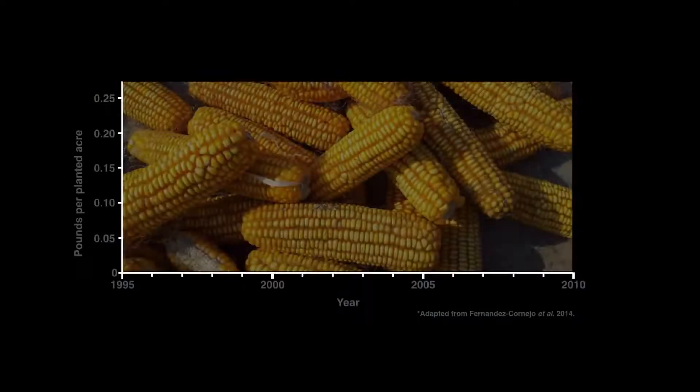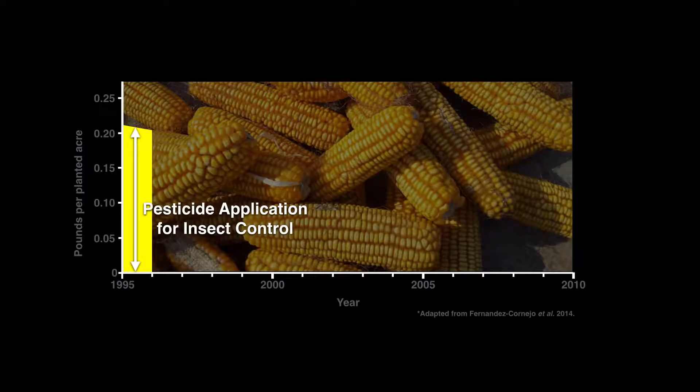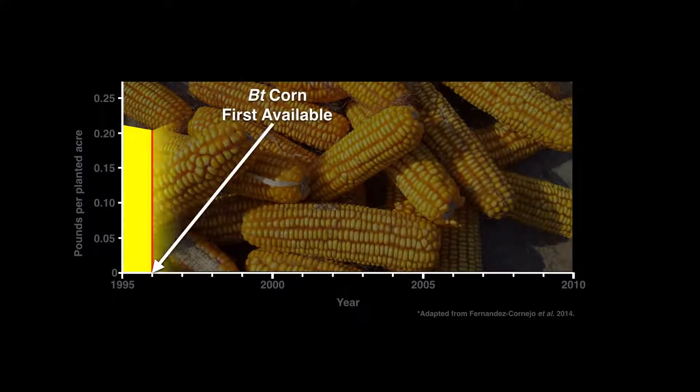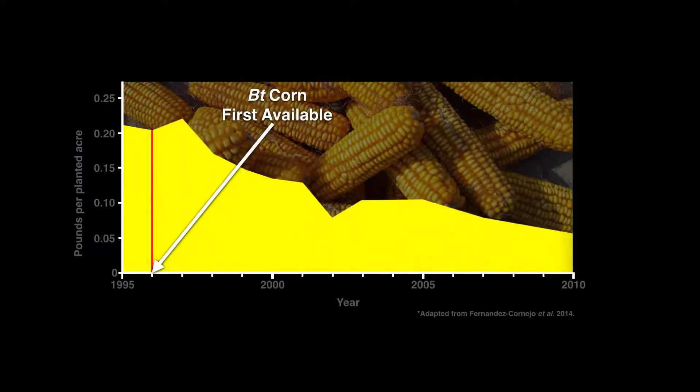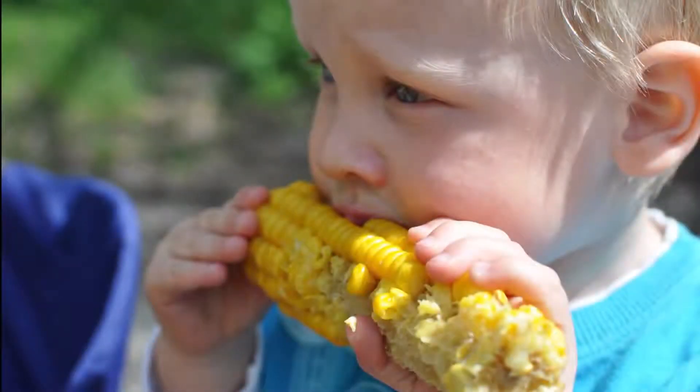That way, when insect larvae eat the plant tissues, they're exposed to the toxins. This form of genetic change in plants can reduce overall pesticide spraying to control insects. And when people eat these plants, the toxins do not work on us or cause us harm.